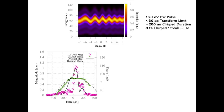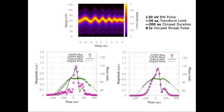Significantly, it retrieves a shorter pulse than in reality. However, the VTGPA retrieves the pulse and phase without error.